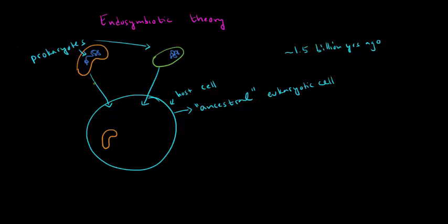So now the mitochondria and chloroplasts are living inside this host cell, and they live together in symbiosis. Symbiosis is when organisms live together and each one gives the other something — everybody gains something. An example you might have heard of is the bacteria E. coli in our intestine. We give E. coli a warm place to live and some nutrients, and in exchange, they make vitamin K, which is very useful for us. So the host cell gives the mitochondria and chloroplasts a nice place to live and nutrients.